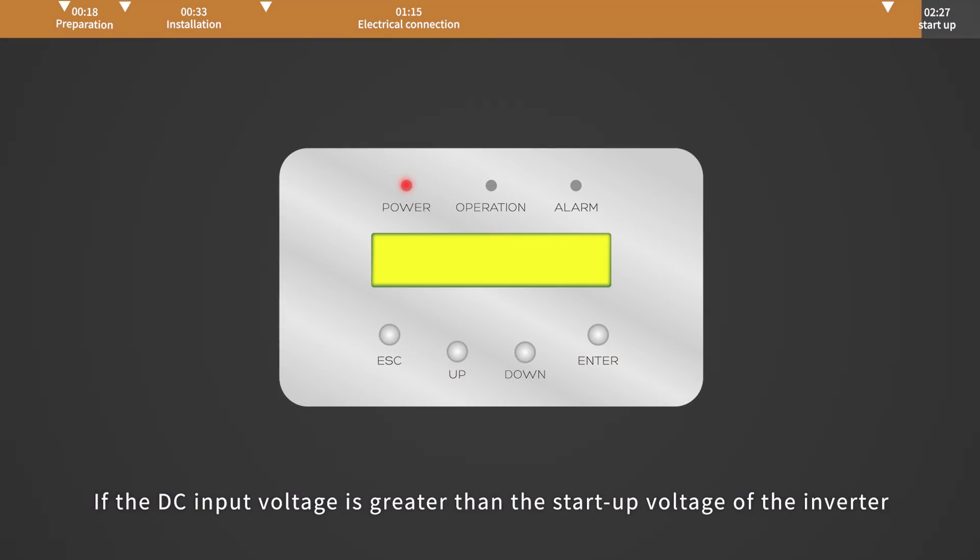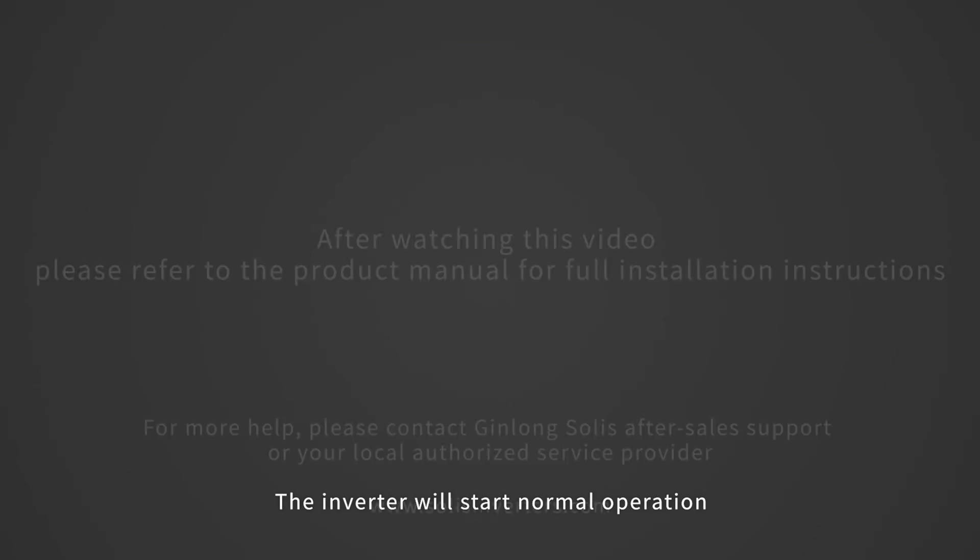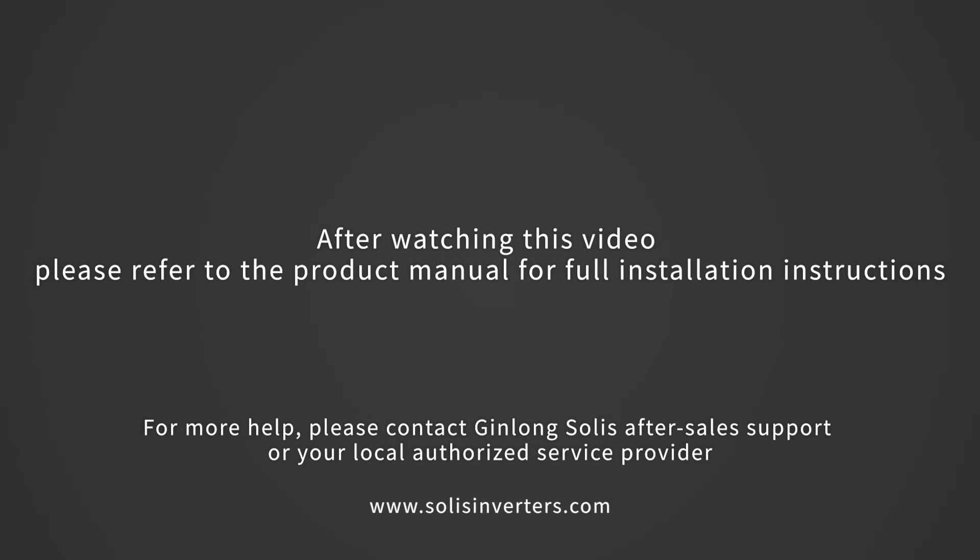If the DC input voltage is greater than the startup voltage of the inverter, the inverter will start up. After the self-check is complete, the screen will show waiting. After the required startup delay ends per local grid requirement, the inverter will start normal operation. After watching this video, please refer to the product manual for full installation instructions.